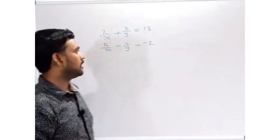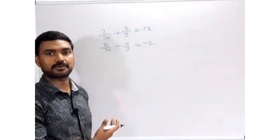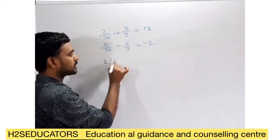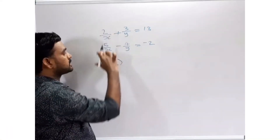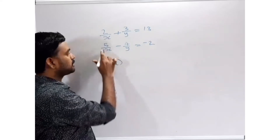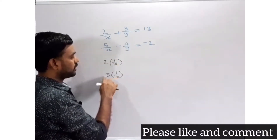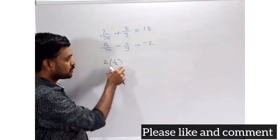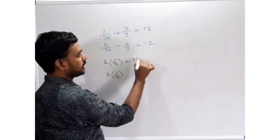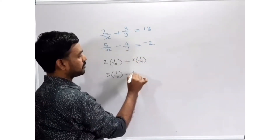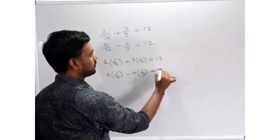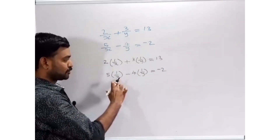For this type of equation, how to solve or how to convert — reducible to linear form. For this, we can change the equation: 2/x can be written as 2 × (1/x). In the second equation, 5/x becomes 5 × (1/x). Similarly, 3/y can be written as 3 × (1/y), and -4/y as -4 × (1/y). We can observe that 1/x appears in both equations, and 1/y appears in both equations.